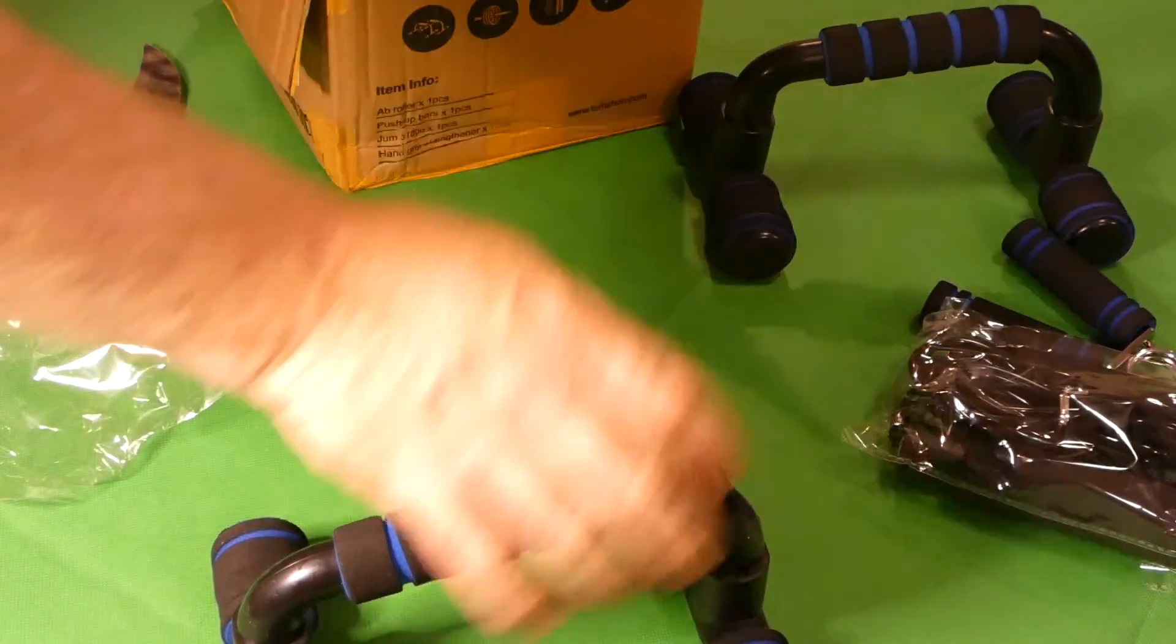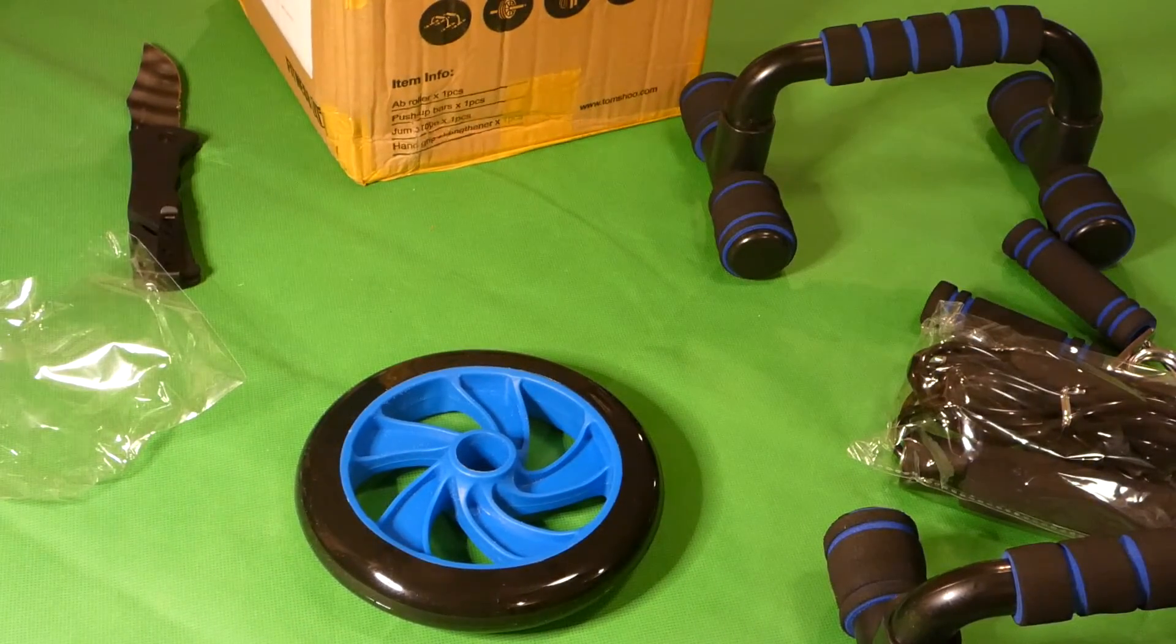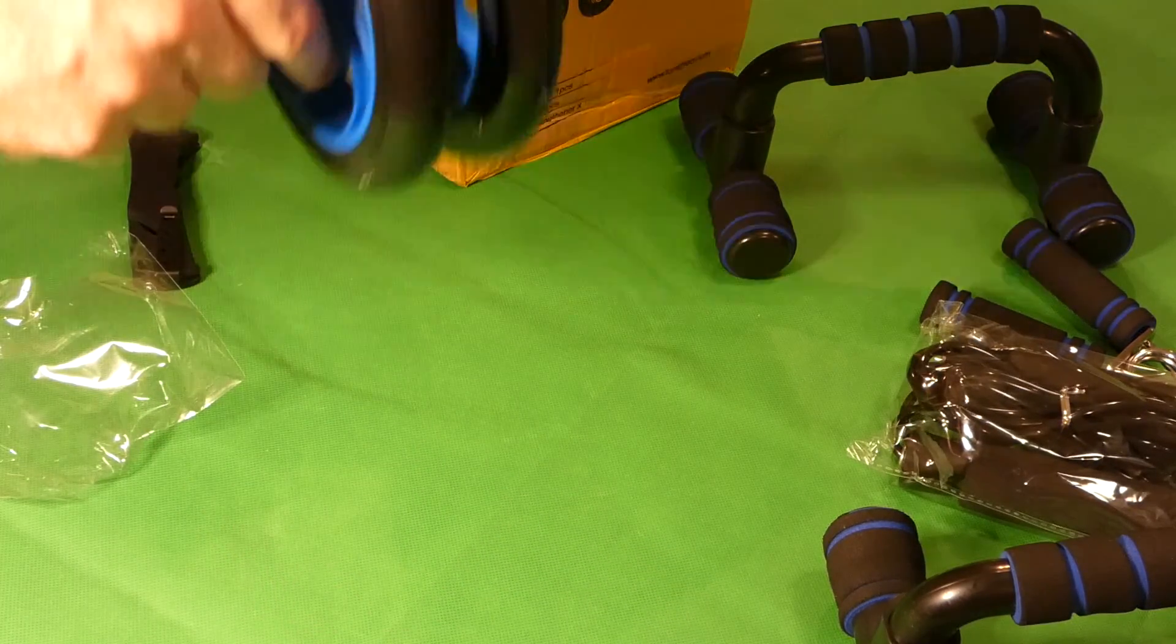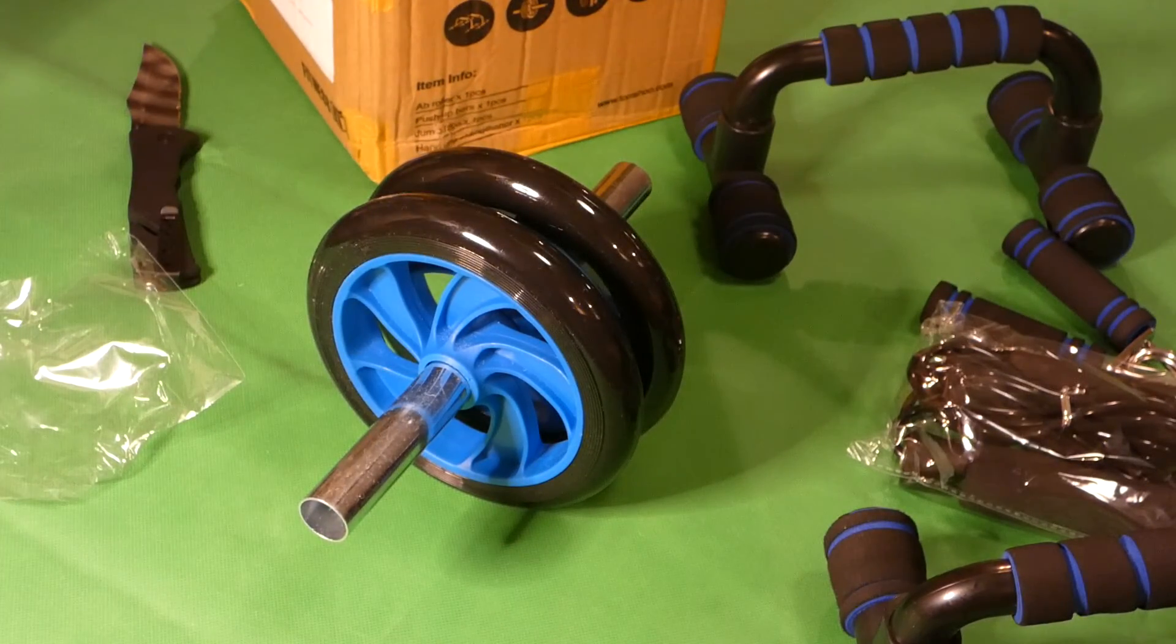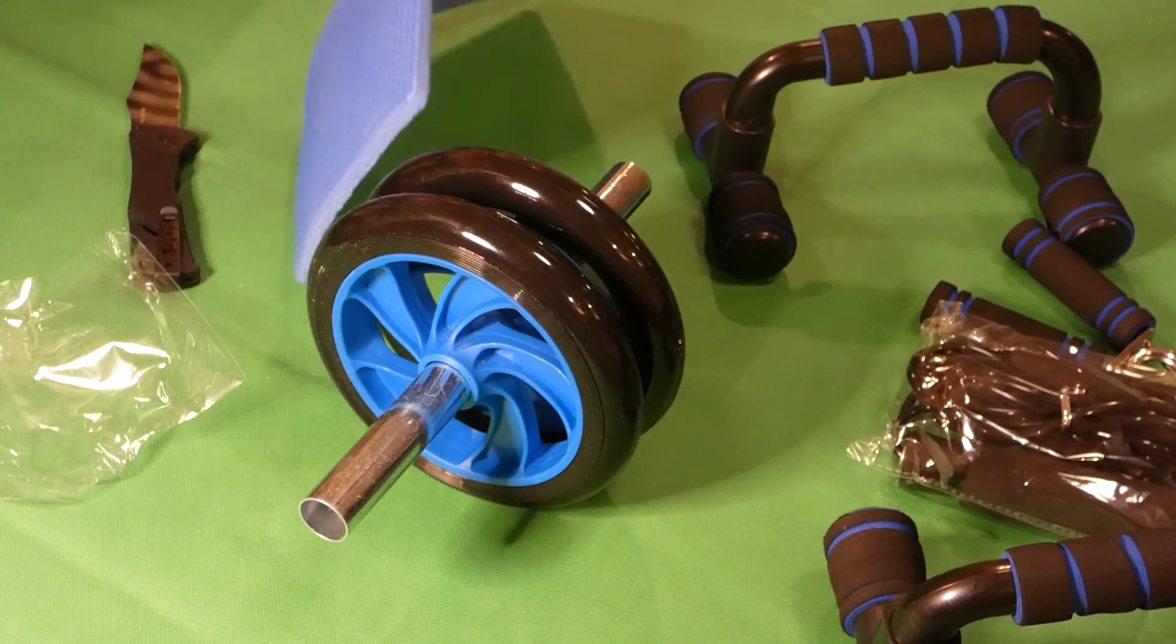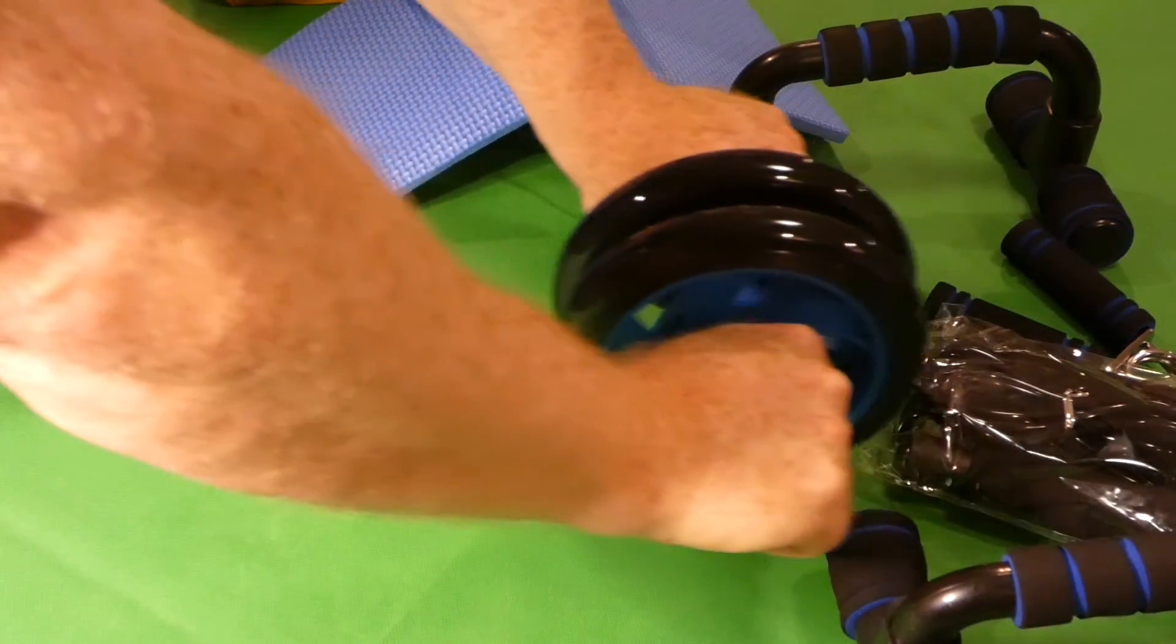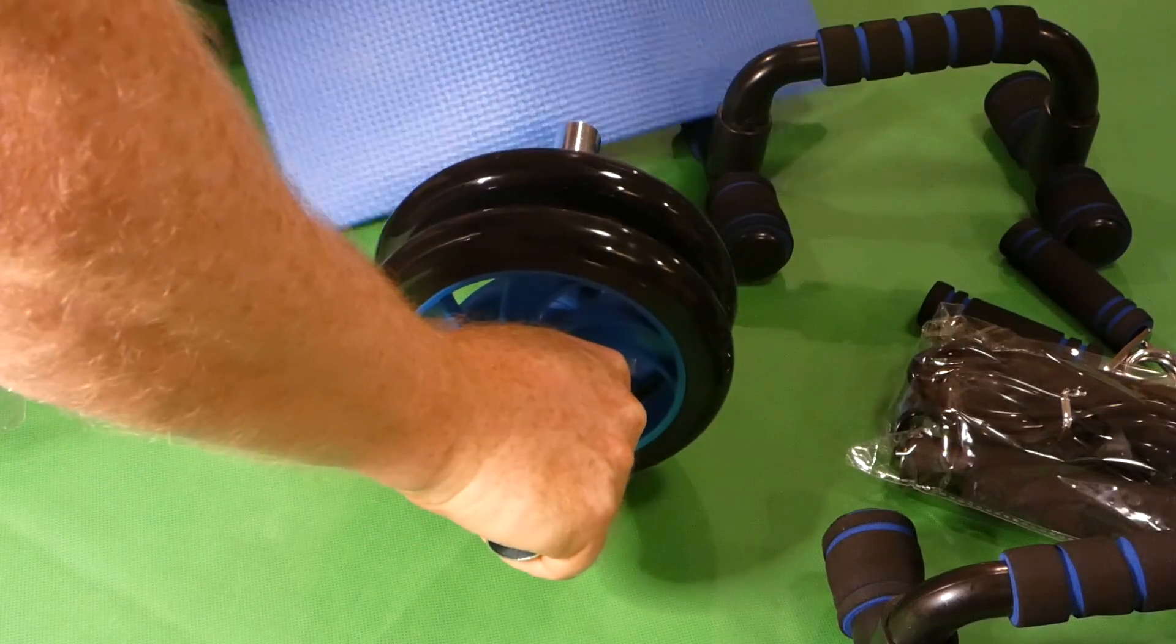And here's like an ab roller and a knee pad. So that's it, folks. You would hold on to this and ab roll away while you have that on your knees.